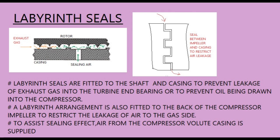Labyrinth seals are fitted to the shaft and casing to prevent leakage of exhaust gas into the turbine end bearing, or to prevent oil being drawn into the compressor. A labyrinth arrangement is also fitted to the back of the compressor impeller to restrict leakage of air to the gas side. To assist the sealing effect, air from the compressor volute casing is supplied.